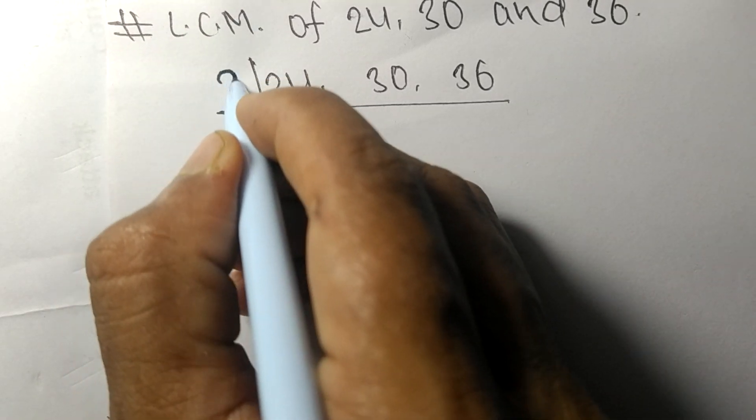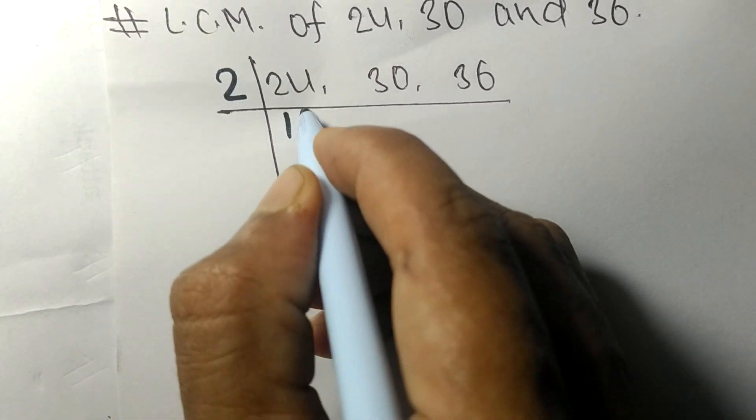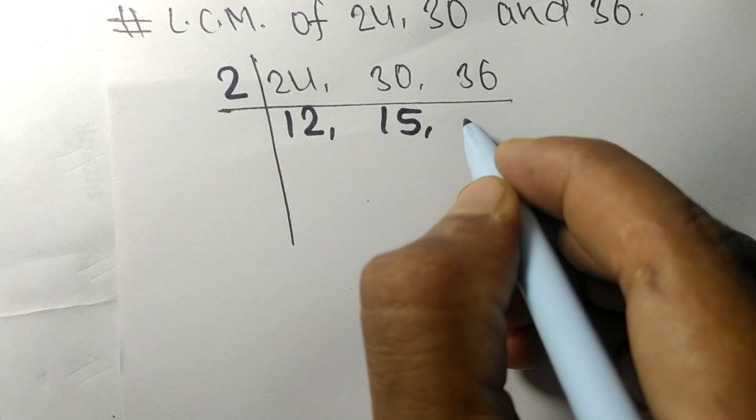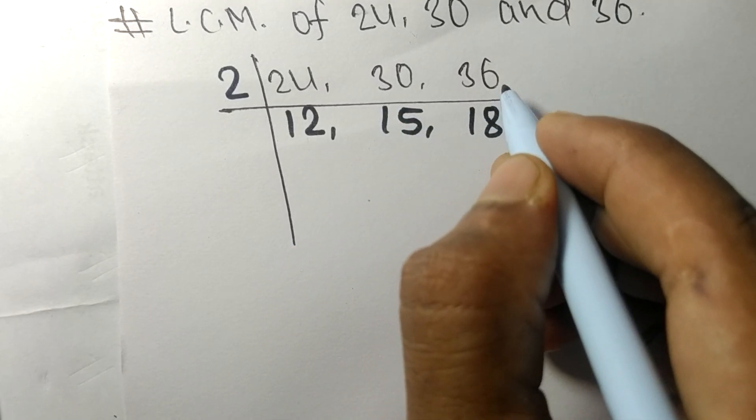All numbers are divisible by 2: 2 times 12 means 24, 2 times 15 means 30, 2 times 18 means 36.